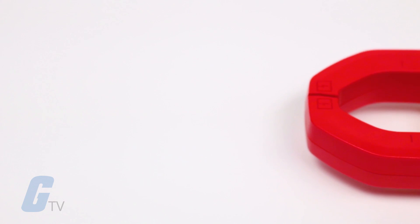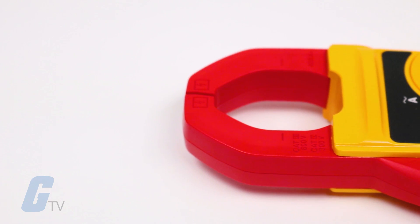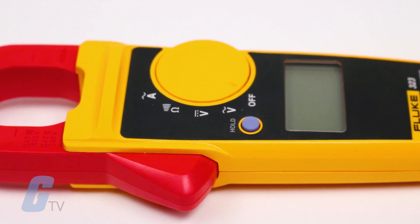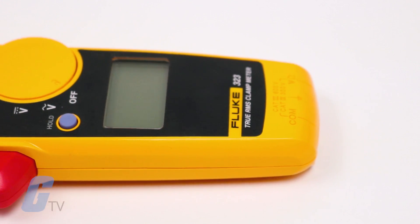This clamp meter can measure AC current up to 400 Amps, DC Voltage up to 600 Volts and resistance measurement up to 40 Kilo Ohms with continuity detection.